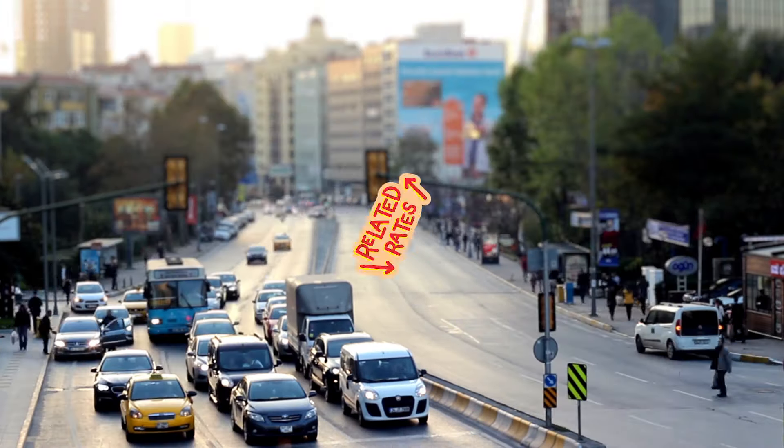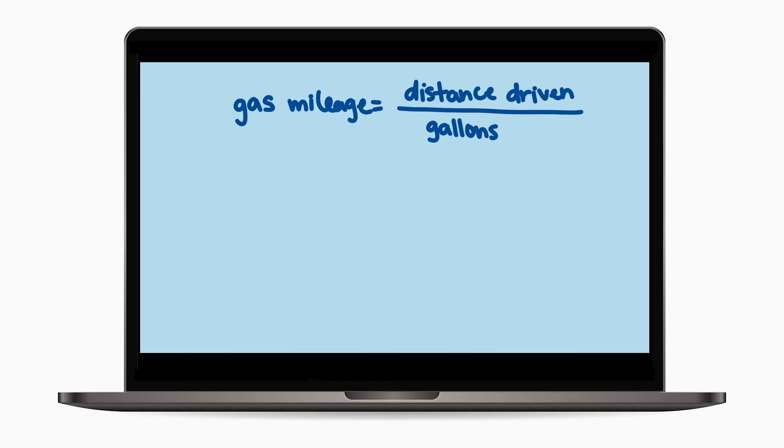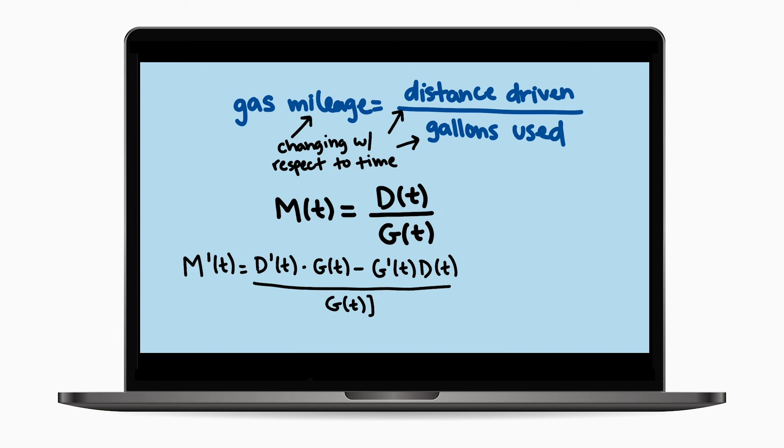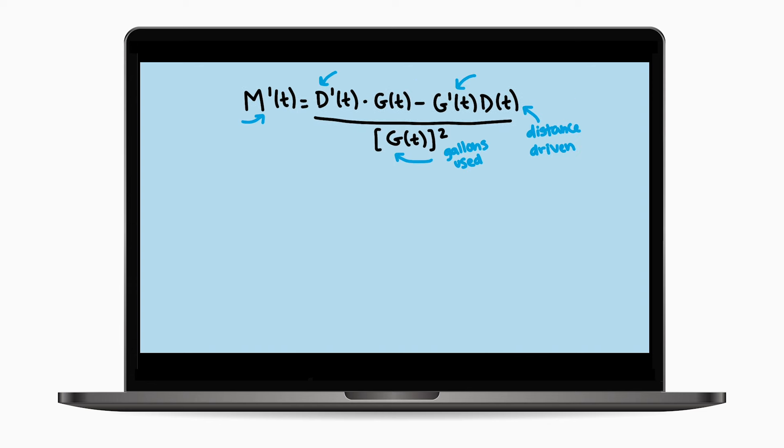In this video, we'll use a technique from calculus called related rates to derive a formula that you can use to find out how much gas your own vehicle uses when it idles. And we will use our results to answer questions about the cost and pollution of idling.